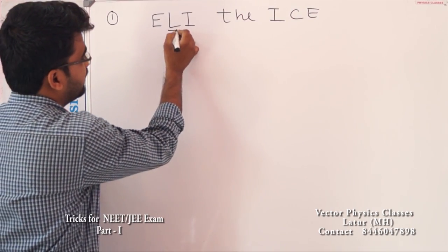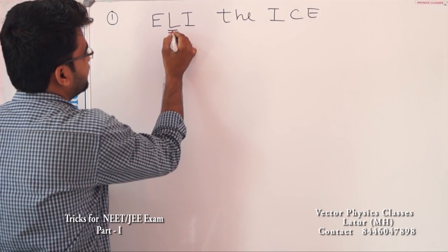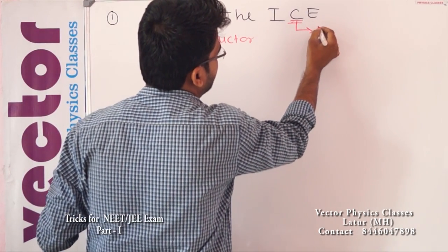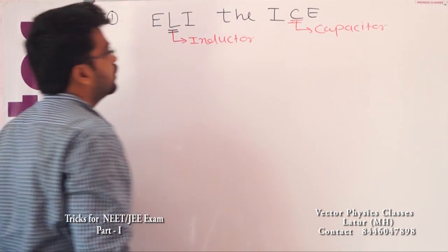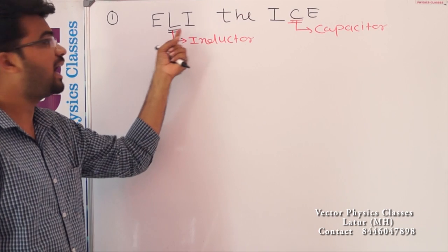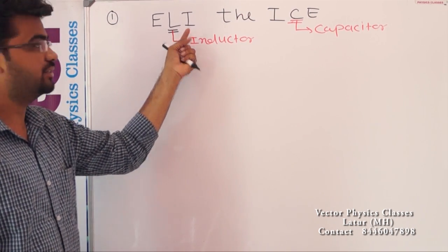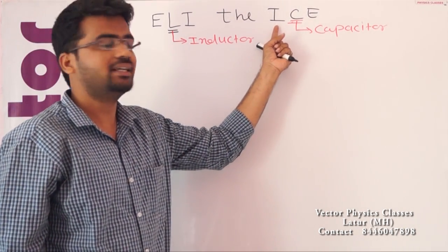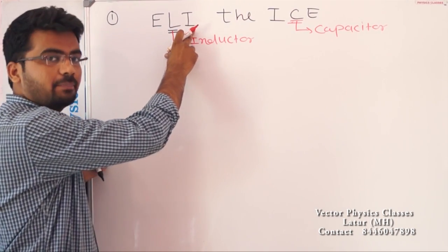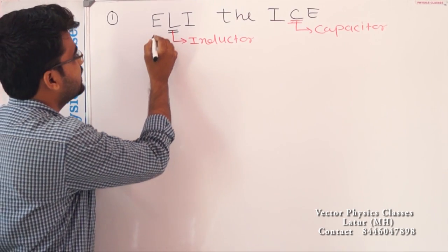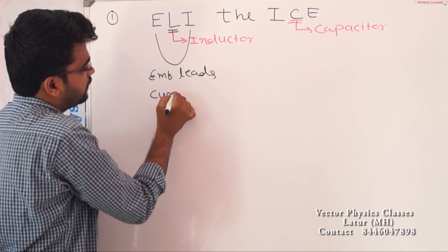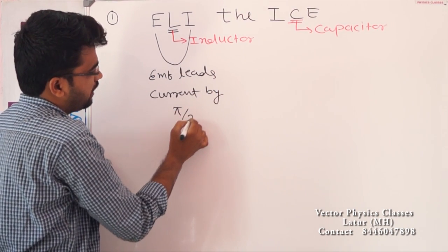So, ELI the ICE — what does this represent? This L means inductor, and this C means capacitor. In the ELI part, E represents EMF and I represents current. So in the inductor, EMF leads current by π/2.